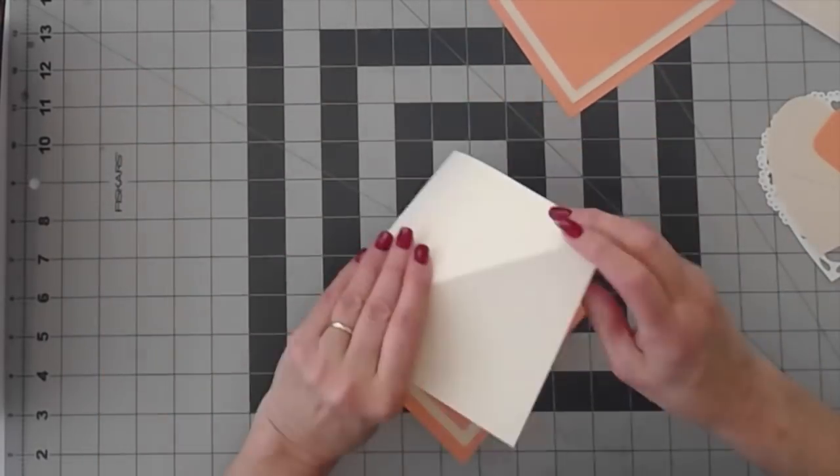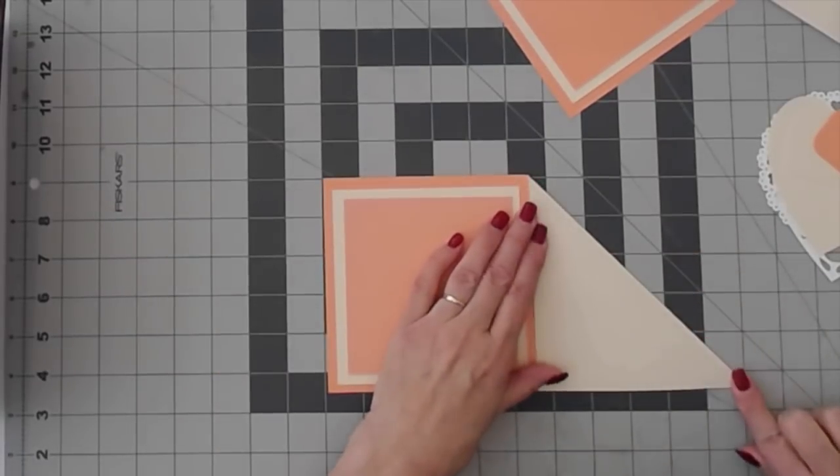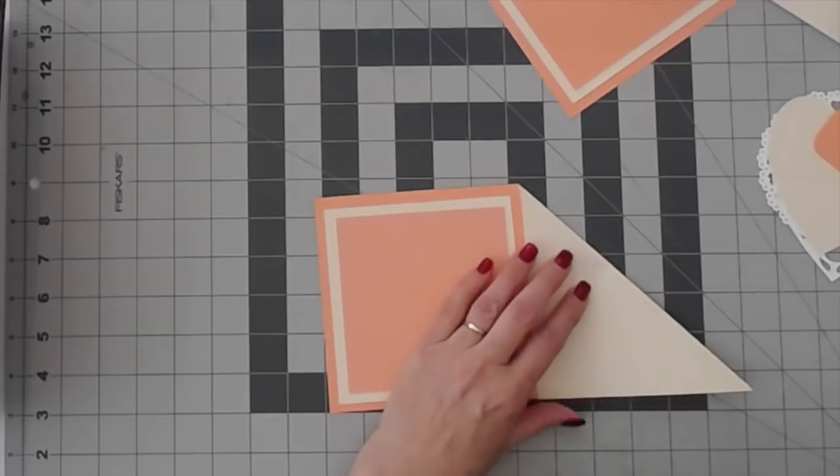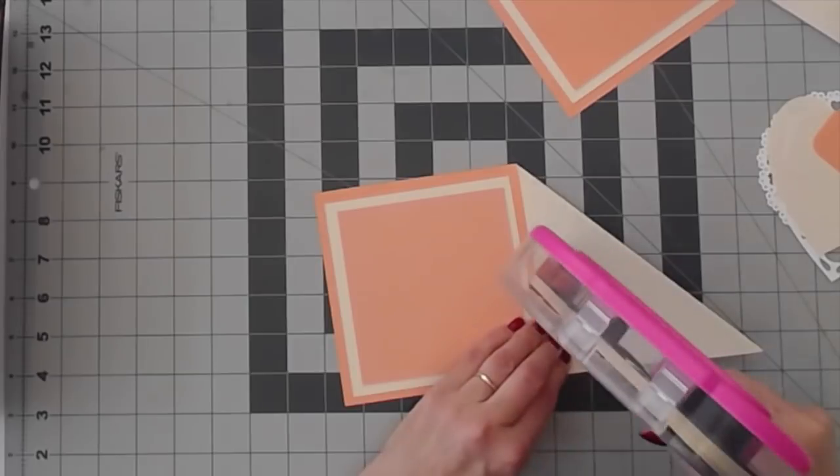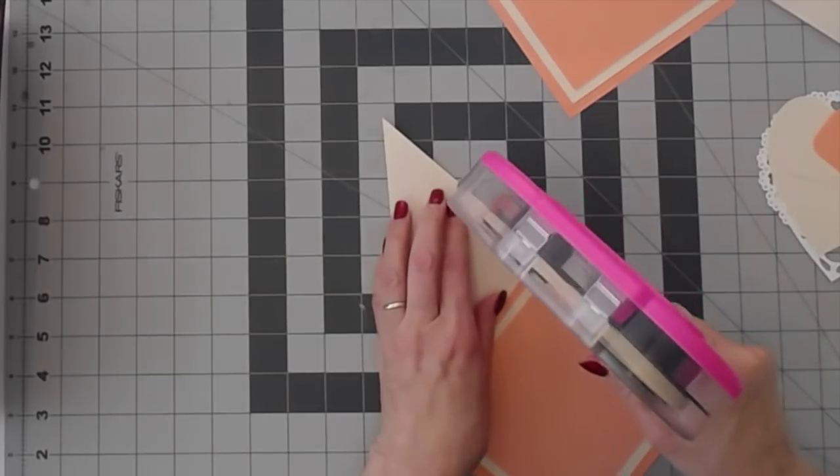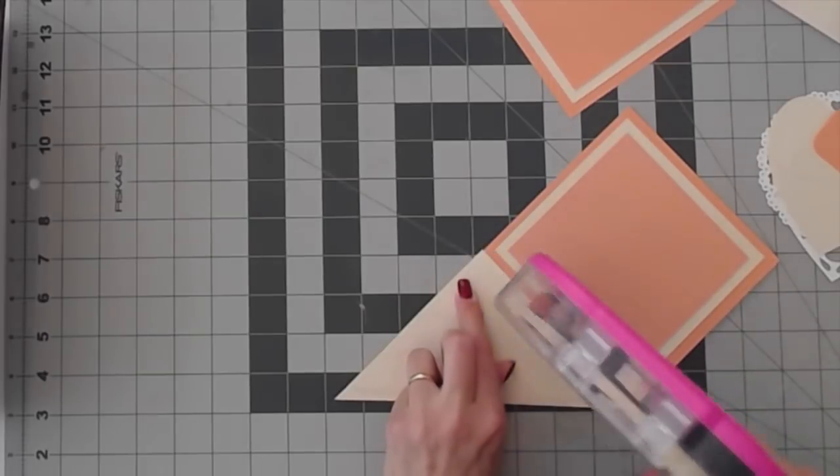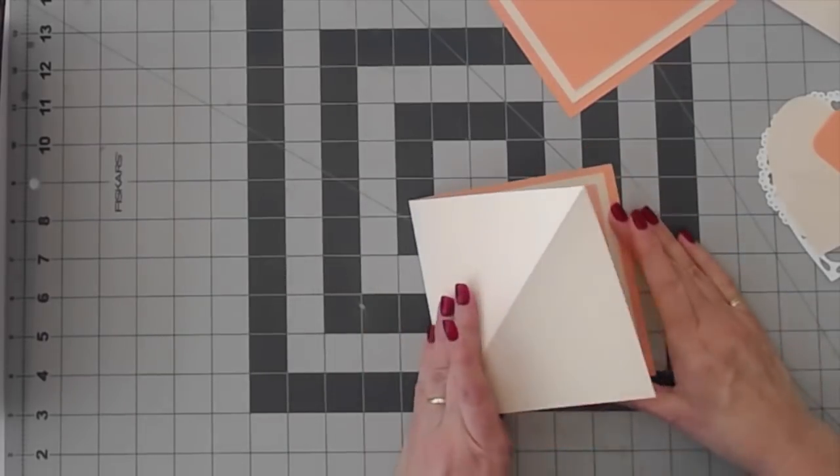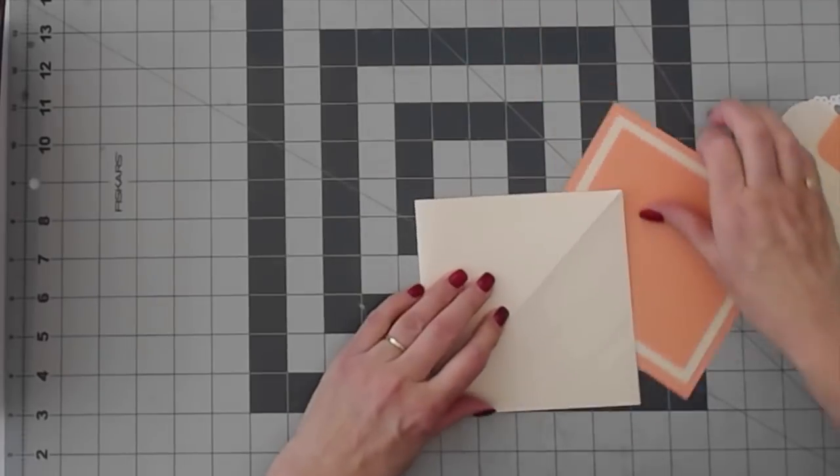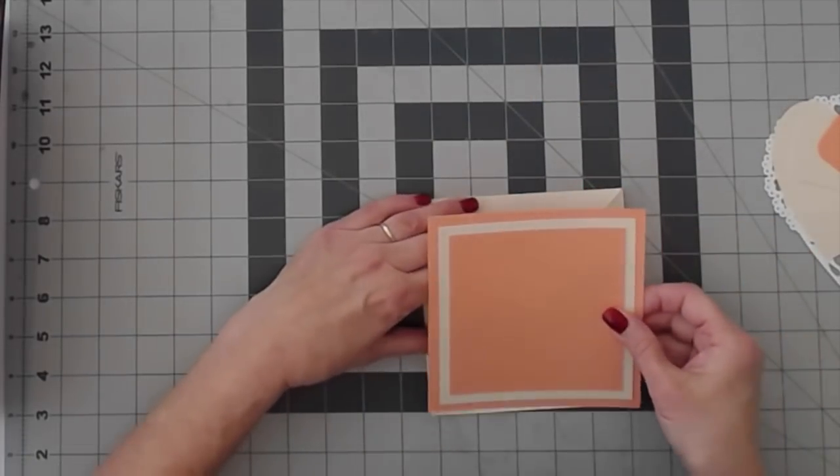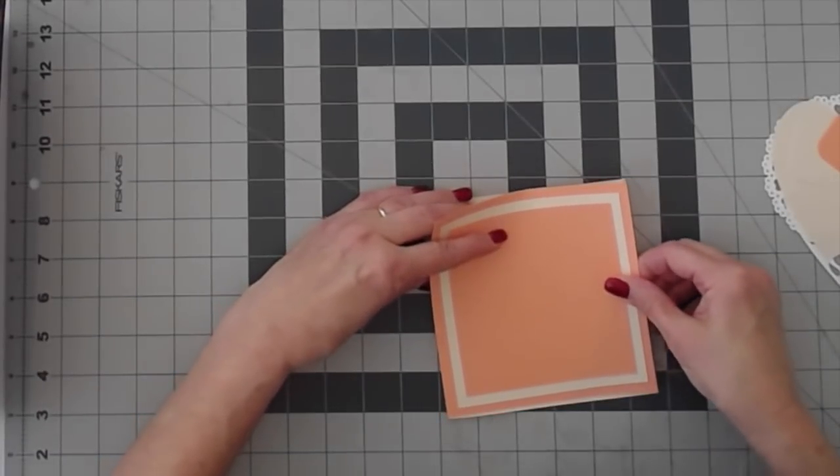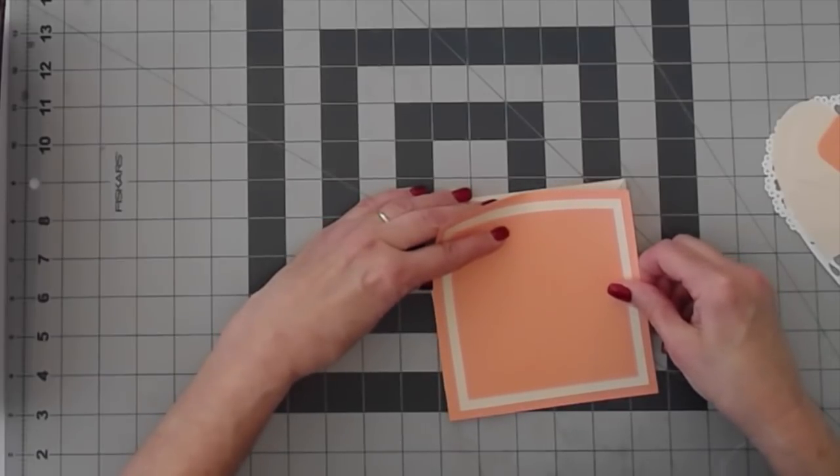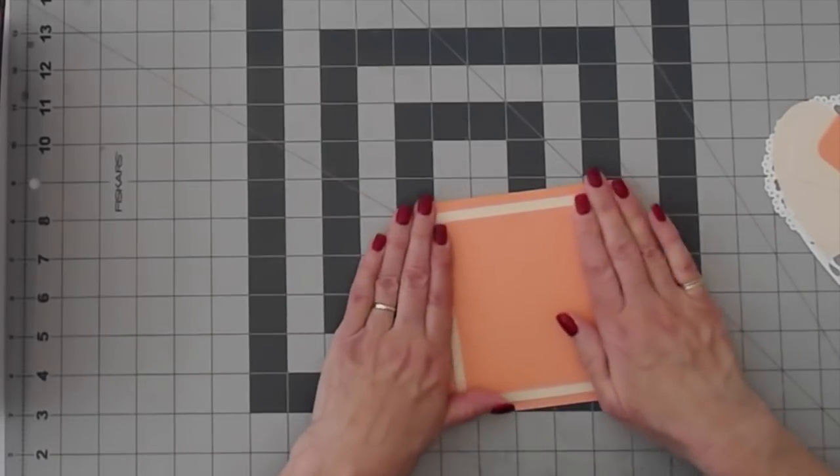On the outside you want to add adhesive only on this triangle, on this one right here. We are going to place adhesive along it. I find it's more accurate if you fold it before you do it. And then we'll flatten it out. And you'll add your card front. Of course you want to line up again right along the edge.